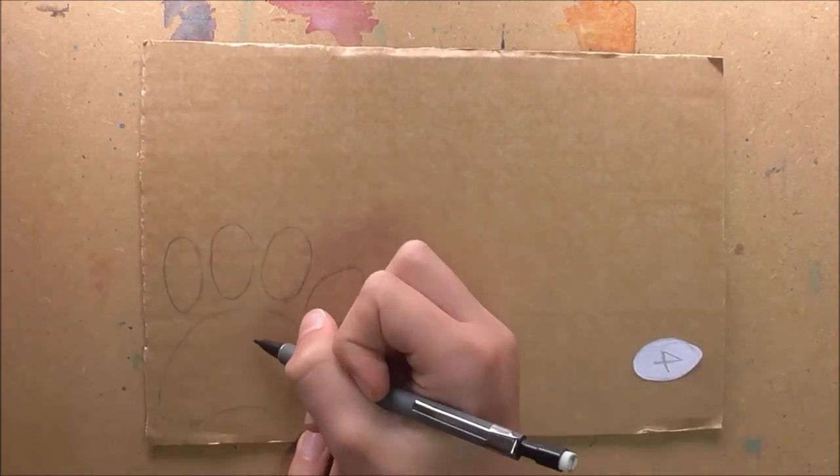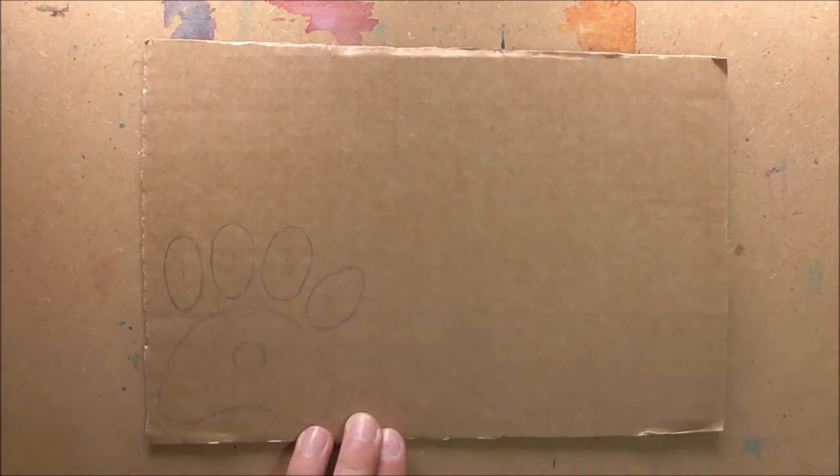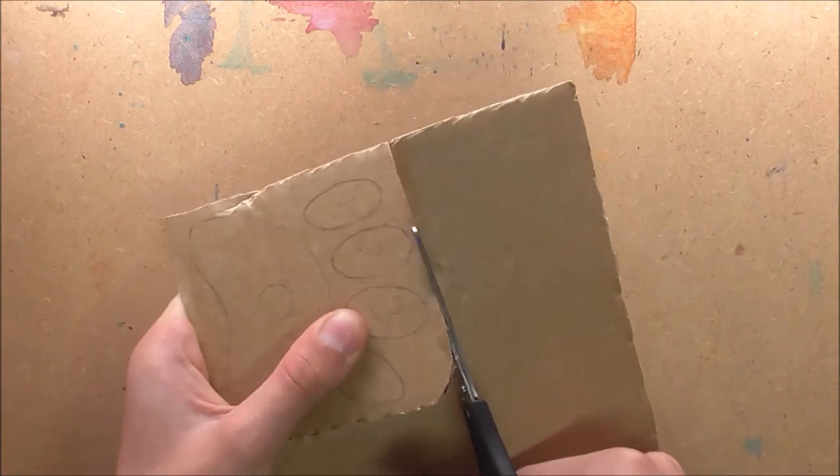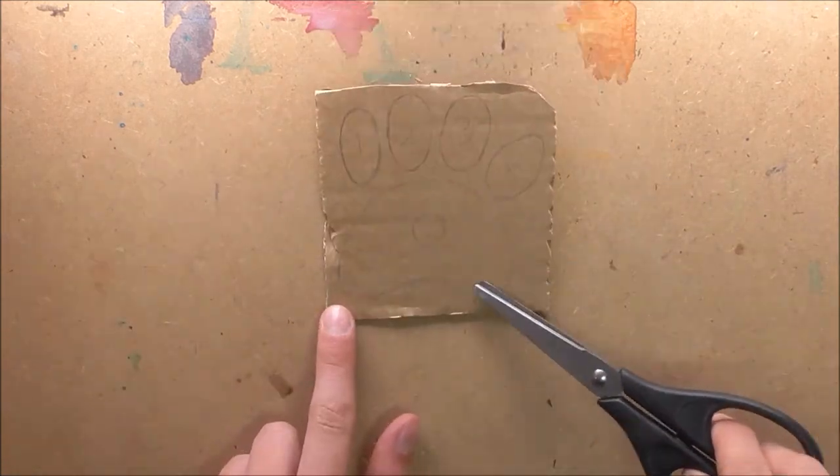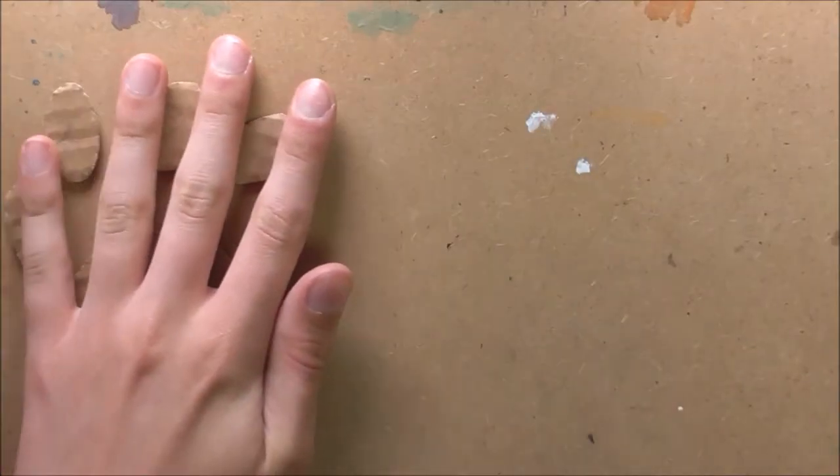Now once you've done and transferred all of your designs over, what you want to do is you want to cut out all these cardboard pieces. You want to be as accurate as you can because these are going to be the actual place where the ink goes on and prints, kind of like lino printing.